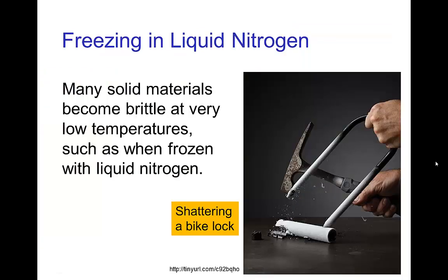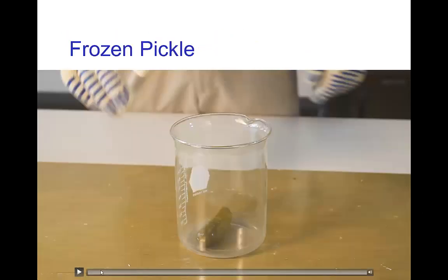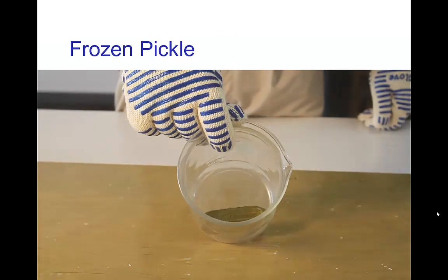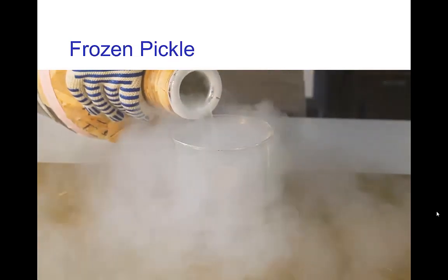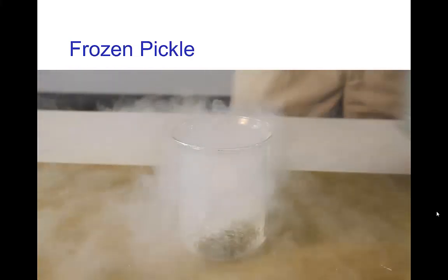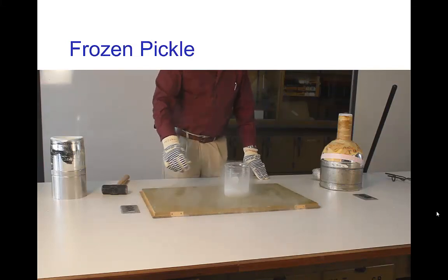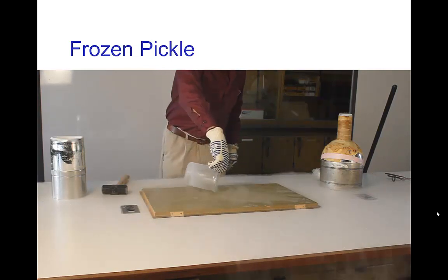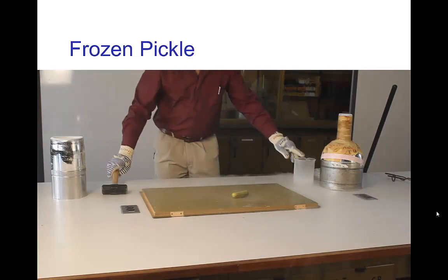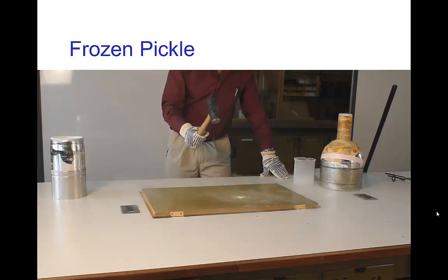Another property that changes with temperature: if we cool objects to very low temperatures like liquid nitrogen, many solid materials become very brittle. You can see a strong bike lock being shattered after being dipped in liquid nitrogen. Here, an ordinary pickle from a jar has liquid nitrogen poured inside it. The fog you see with liquid nitrogen is water vapor condensing — the nitrogen itself is invisible as a gas. Now the pickle has become very brittle and shatters quite easily.